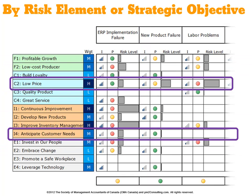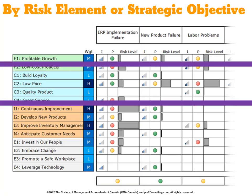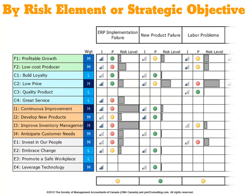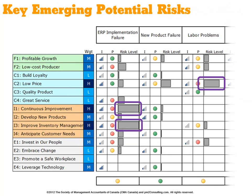We can also look at this horizontally. Looking at C2 — low price — we can begin to see the risks associated with that objective compared to, say, anticipate customer needs. That view is not available in most organizations, and the ability to see where risk is occurring is an important element of management's understanding of strategic and operational risk. We can identify specific places to focus — for example, ERP as it relates to continuous improvement and inventory management, as well as labor problems as they relate to price.